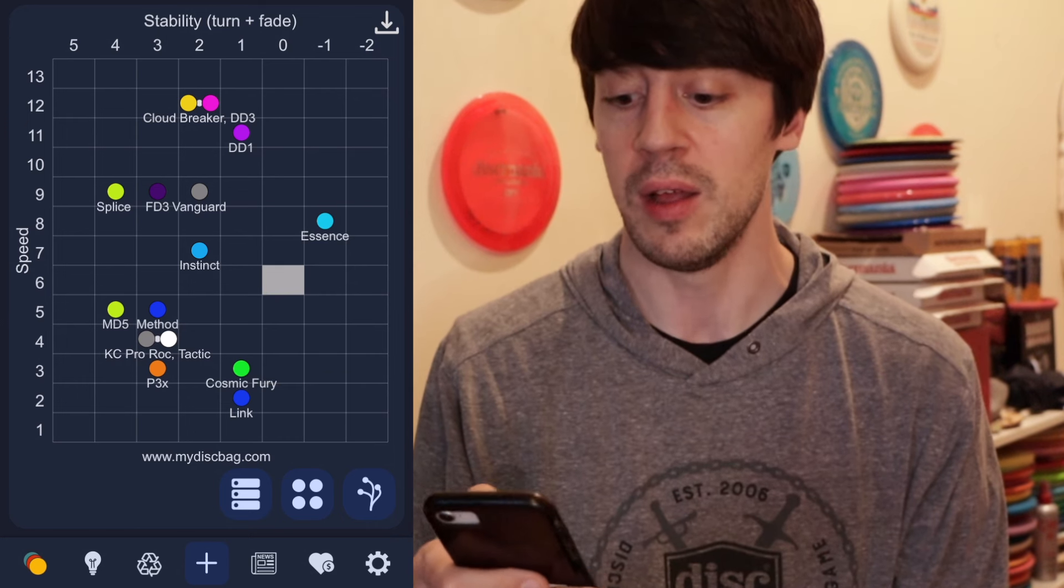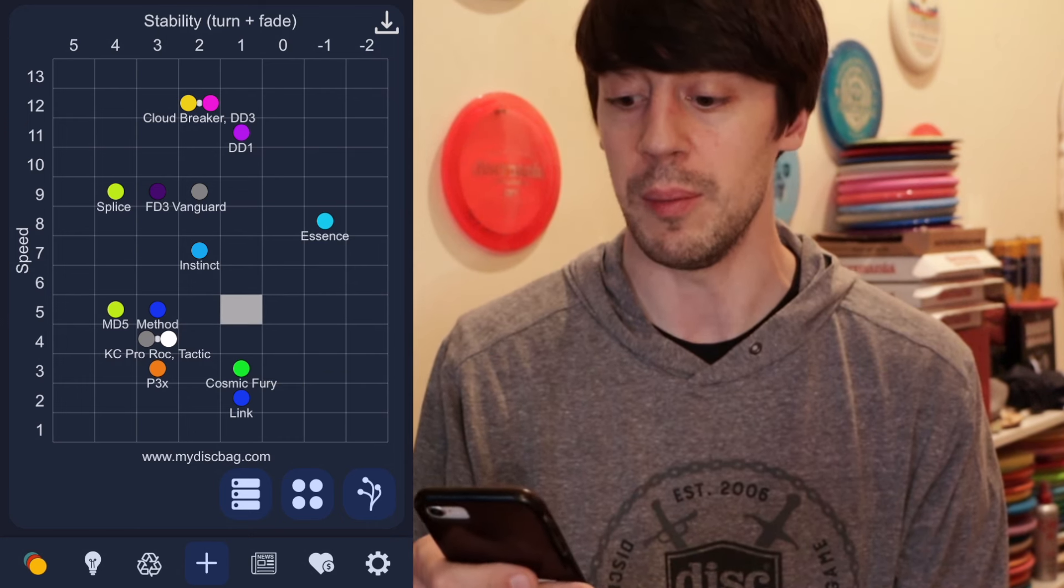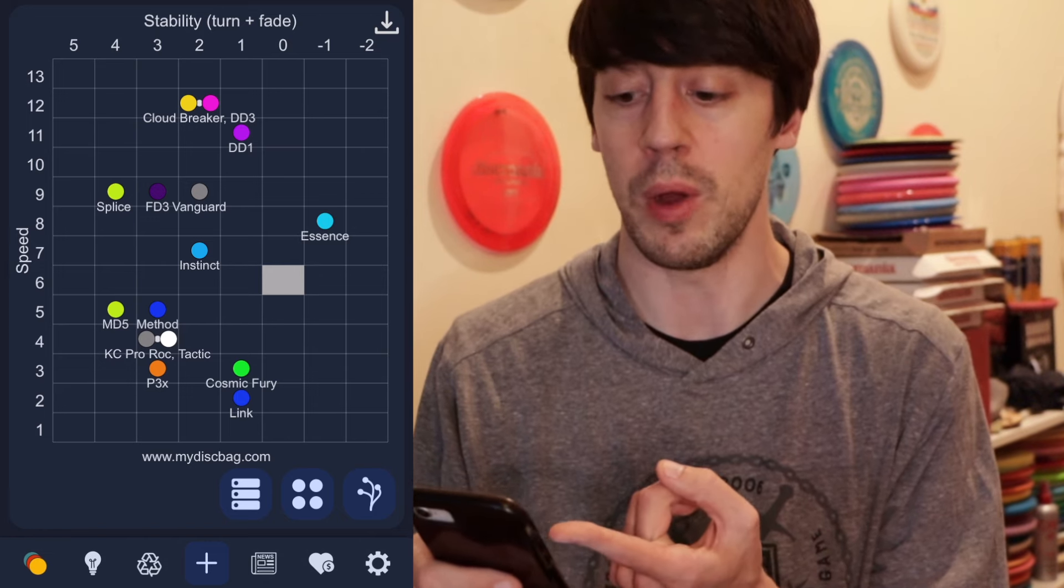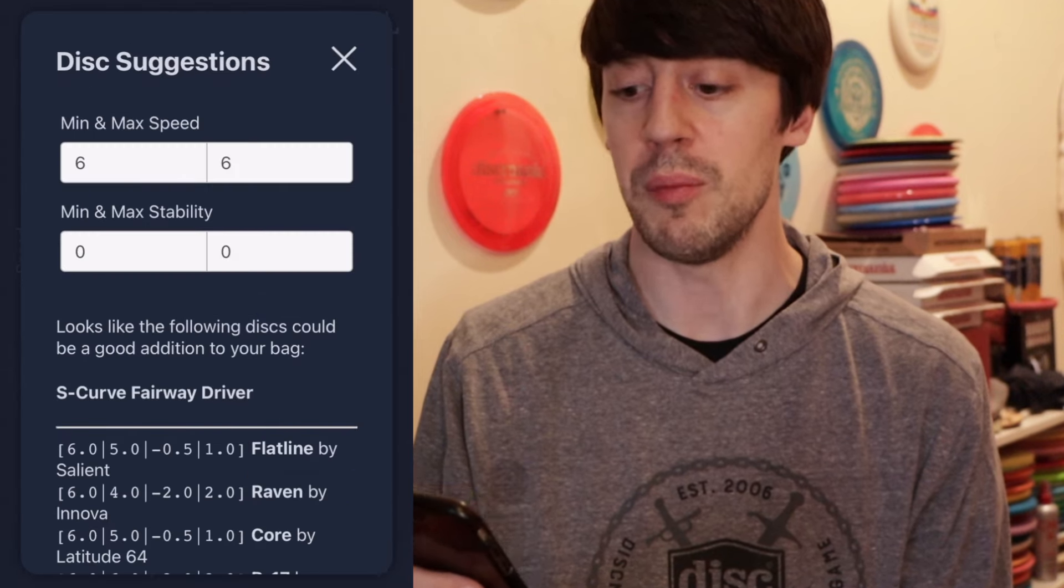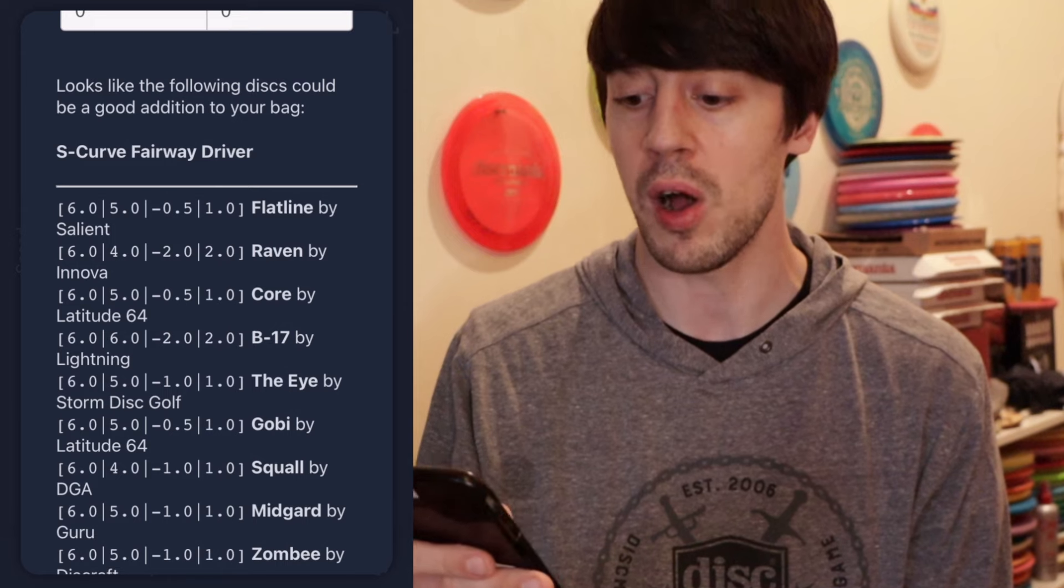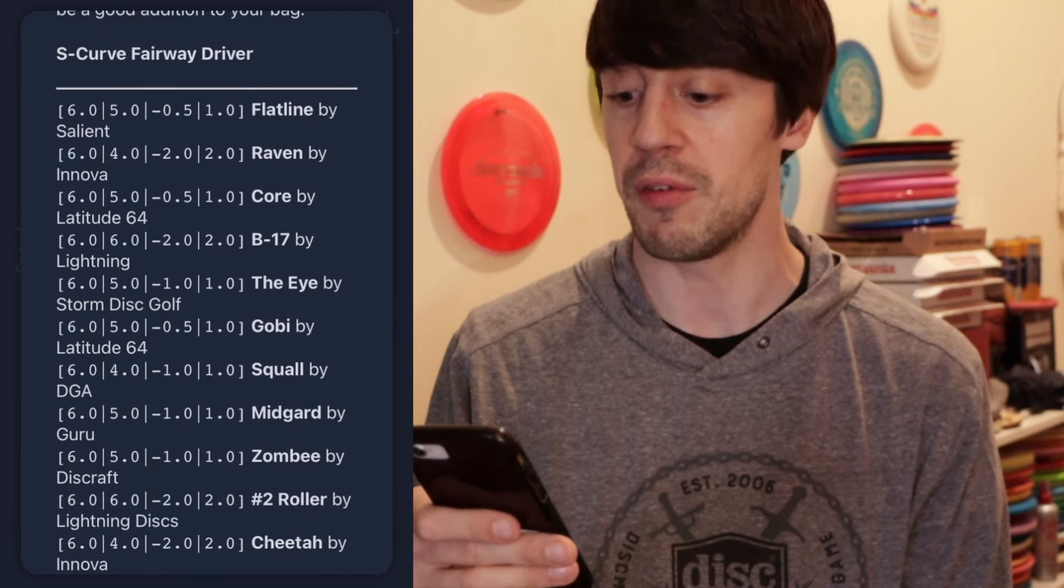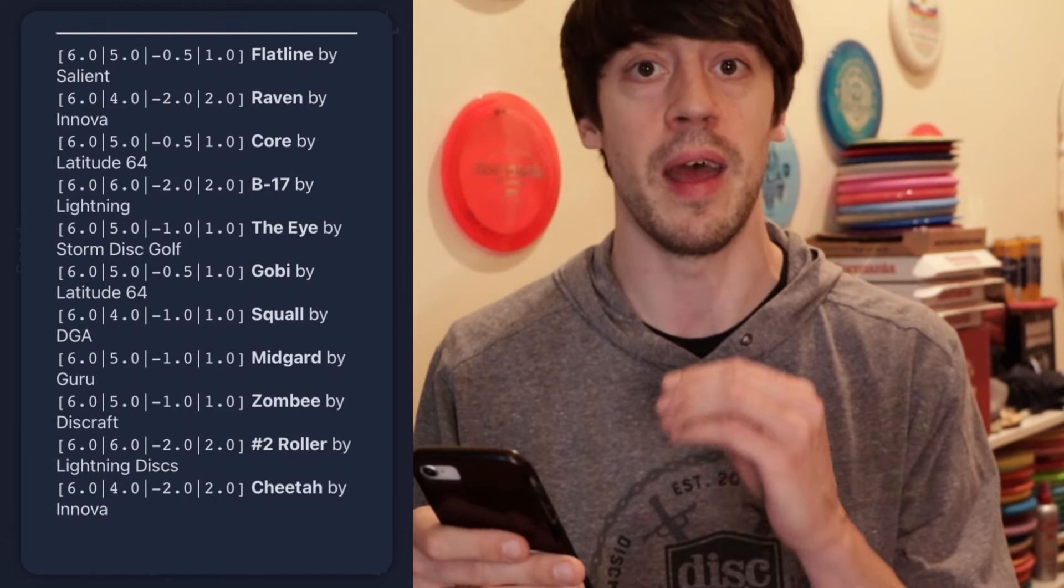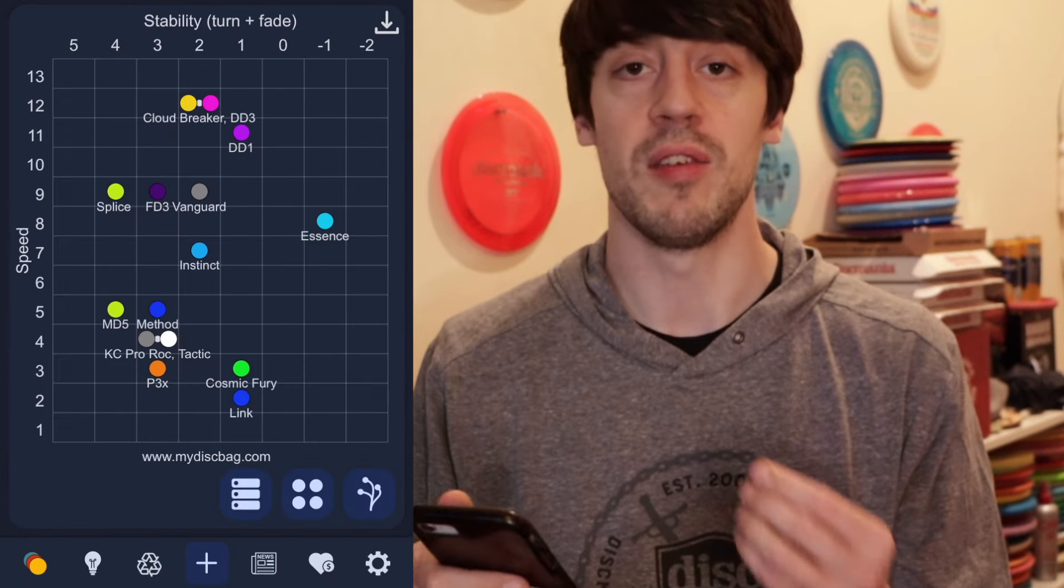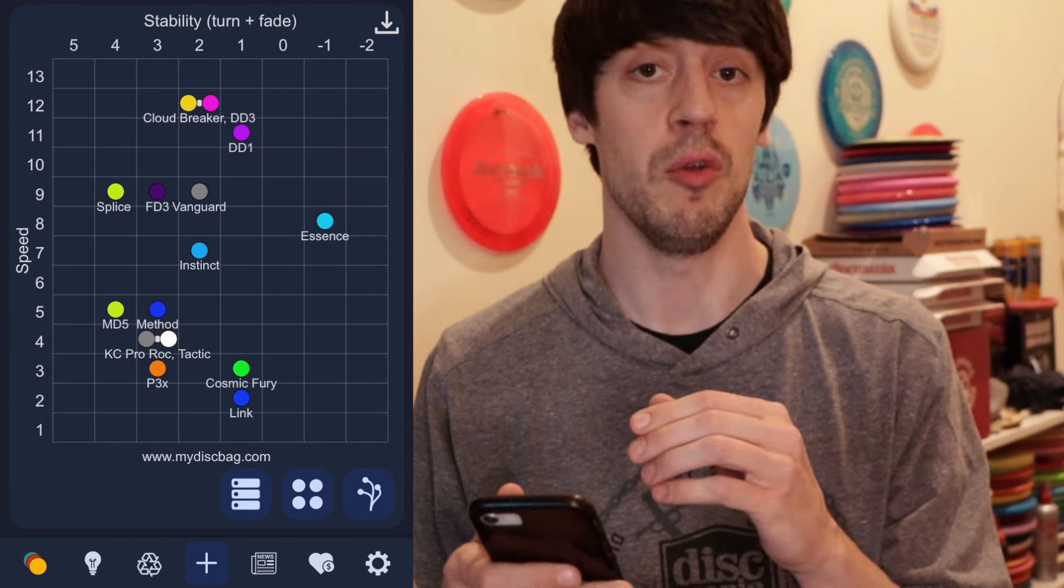And you can actually click on any of these boxes as you see I'm doing right now. So let's say I wanted the slot that I have this little white box on. If I double click it, it gives me disc suggestions and if I scroll it gives you a ton of different discs from different companies that all fall into that box. So it just gives you so much flexibility to see different discs that you might want to get.